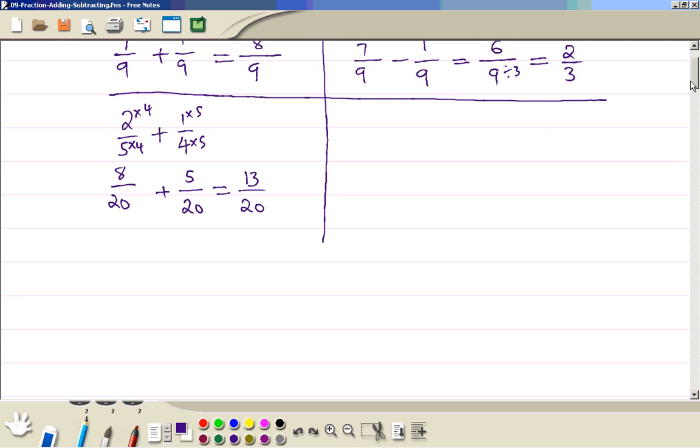Or you can do this number just by cross-multiply. 2 fifths plus 1 over 4, 4 times 2 plus 5 times 1 divided by 5 times 4.